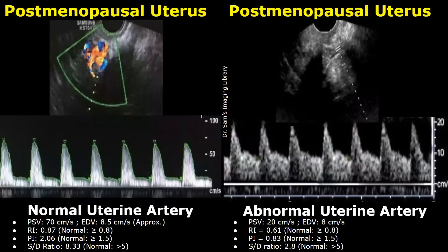Now we will look at uterine artery Doppler waveforms in a postmenopausal uterus. The values are slightly different. In normal cases, the resistive index should be greater than or equal to 0.8. The pulsatility index should be greater than or equal to 1.5, and the SD ratio should be more than 5.